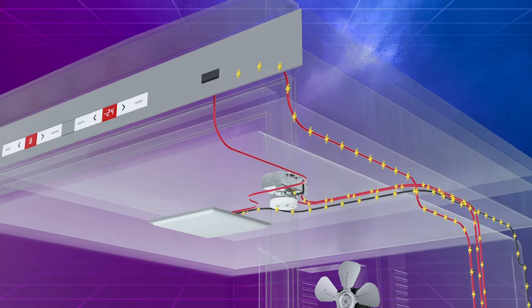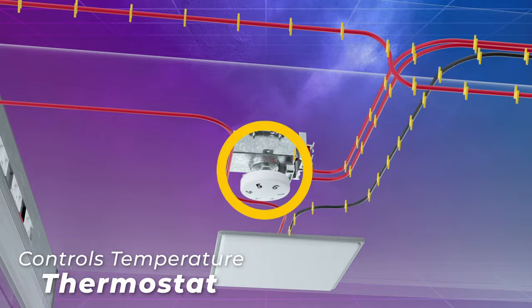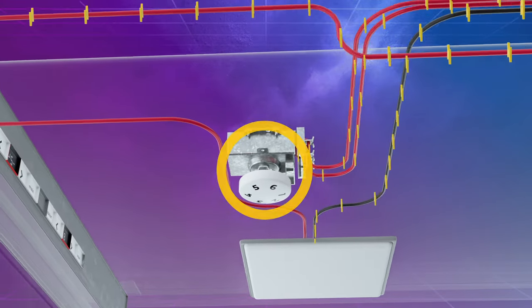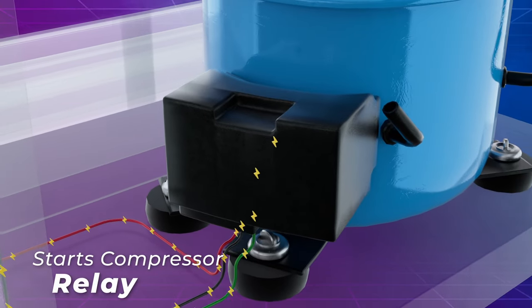The thermostat is also connected to the live wire and controls the temperature inside the refrigerator. If the temperature goes above a certain value, the compressor is switched on via a relay.